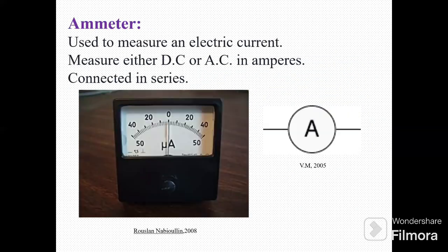The first measurement device is the ammeter. See in this image, this is an ammeter and this is the symbol of this ammeter. The ammeter is used to measure electric current. It measures either DC current or AC current in amperes. It is always connected in series.